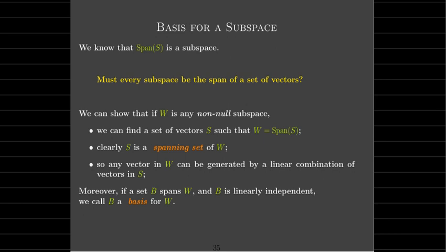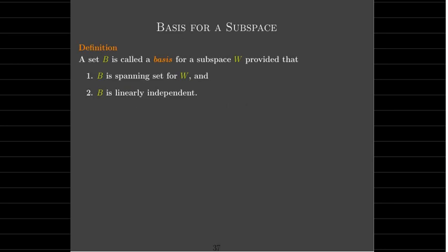Now, if we have a set B which is a spanning set — so it spans W — and is linearly independent, that set is called a basis for W, a basis for the subspace W. The plural of the word basis is bases. Formal definition of a basis: a set is a basis for W provided that it spans W and is linearly independent. In other words, a basis is a linearly independent spanning set.